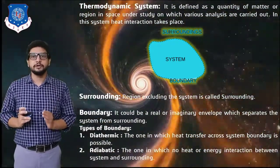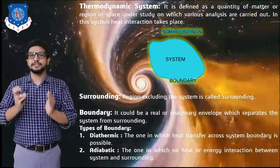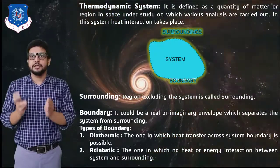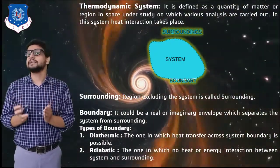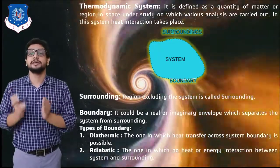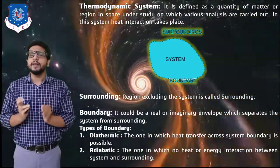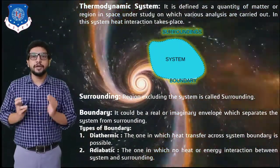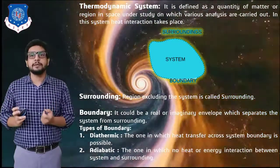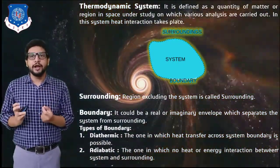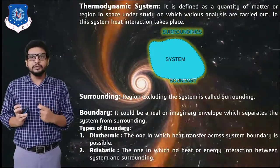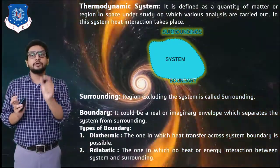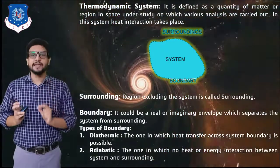First of all, we define a system. A system is a quantity of matter or a region in space on which various analyses and studies are performed. For example, a system can be as small as a biological specimen on which forensic experts perform various experiments — such as a tissue or a part of skin for detecting various causes of disease. So a small piece of tissue is a system on which a study is carried out.